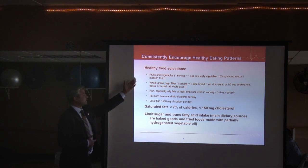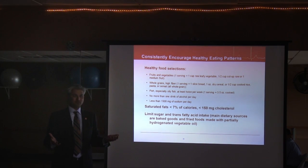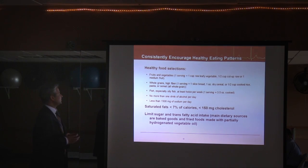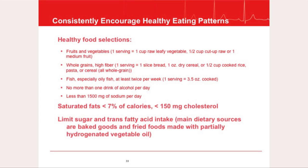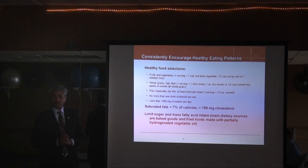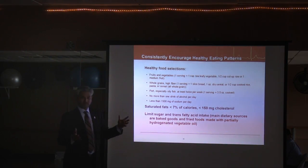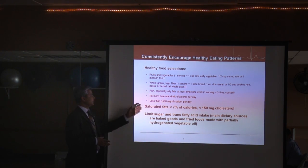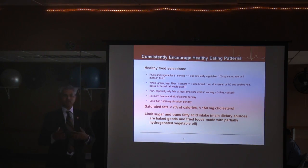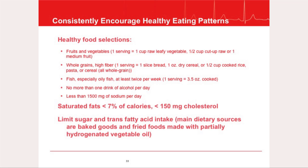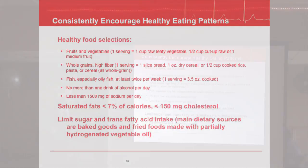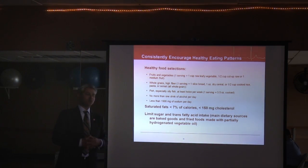A healthy diet is also important. Eat one cup of raw leafy vegetables or one medium fruit or half a cup of cut fruit per day. Eat more whole grains and high-fiber foods — multi-grain breads, brown rice, whole grain pasta. Eat oily fish like salmon at least twice a week or supplement with fish oil. Limit alcohol to no more than one drink per day. Reduce sodium, saturated fats, sugar, and trans fatty acids.